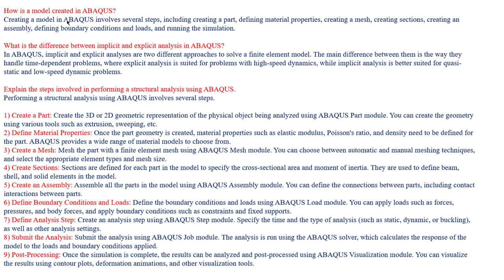When it comes to mesh, it is very important to decide what kind of mesh and what kind of element to use. There are different types available — automatic meshing and manual meshing — and 1D, 2D, and 3D mesh elements are available. For creating sections, you define the module type and assign cross-sectional area and moment of inertia, considering whether it is a beam, shell, or solid element.